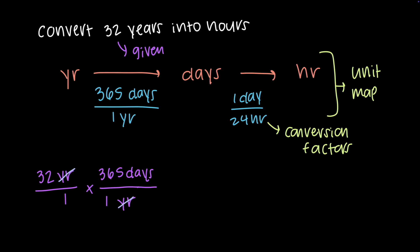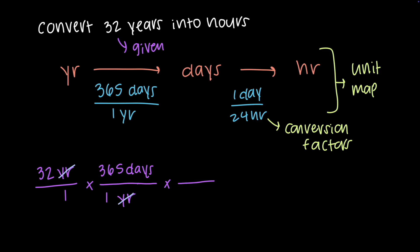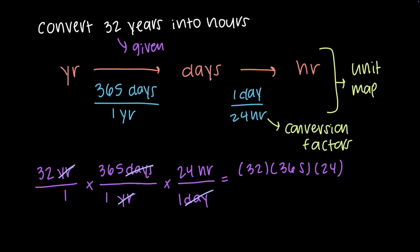I will set up 32 years over one so I have a fraction to cancel out years. In the next fraction, I need years on the bottom, so I set up 1 year on the bottom and 365 days on top. We do not split up conversion factors — they always stay together in a fraction, but we can invert the fraction if needed. The years cancel, leaving days on top. Then I place days on the bottom of the next fraction and 24 hours on top. Days cancel, leaving hours. Multiplying all values on top and dividing by all values on bottom, the answer is 280,320 hours, or with the correct number of sig figs from the given value 32, the answer is 2.8 × 10⁵ hours.